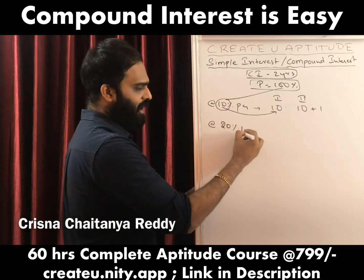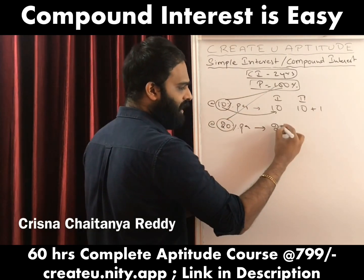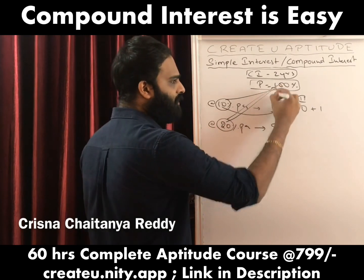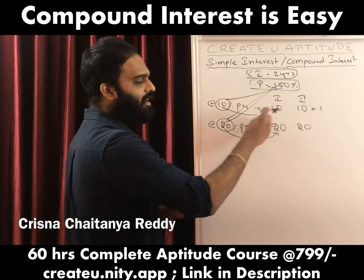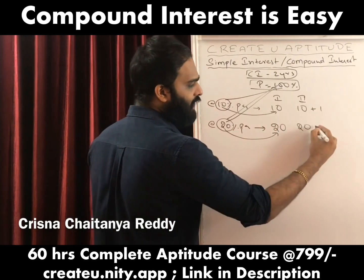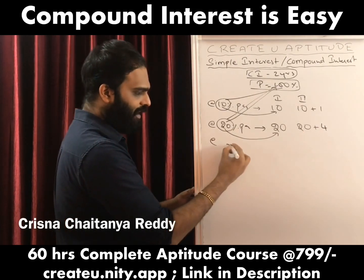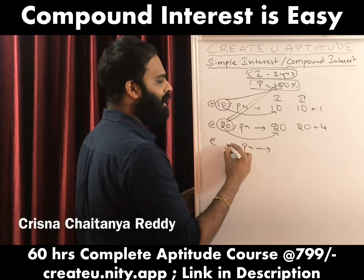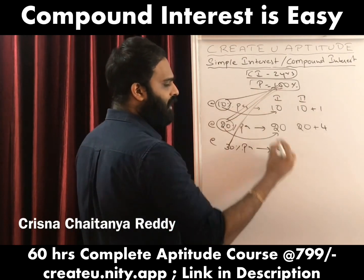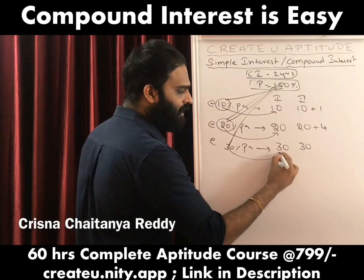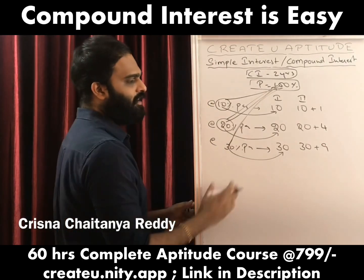For 20% per annum: first year is 20% on 100 = 20. For the second year, I calculate 20% on 100 = 20, and also 20% on the previous year's interest, which is 20% of 20 = 4. So the second year interest is 20 + 4. For 30% per annum: first year is 30% of 100 = 30. Second year is 30% of 100 = 30, plus 30% of 30. Since 10% of 30 is 3, then 30% of 30 is 9. So it becomes 30 + 9.